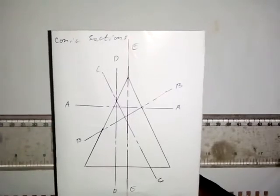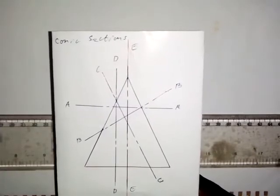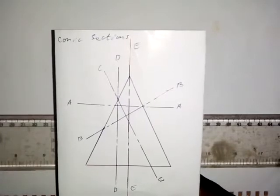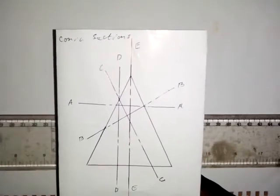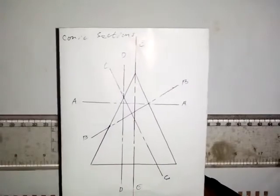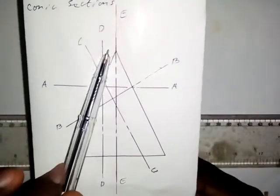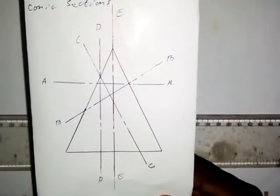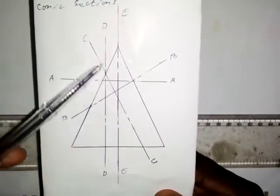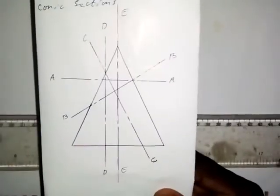When we talk about conic sections, conic sections are the shapes which are obtained when a cone is cut from different positions. If you look at this shape, you will see that this is the front elevation of a cone, which gives you a triangle. We now have lines AA, BB, CC, DD, and EE, which we call cutting planes.